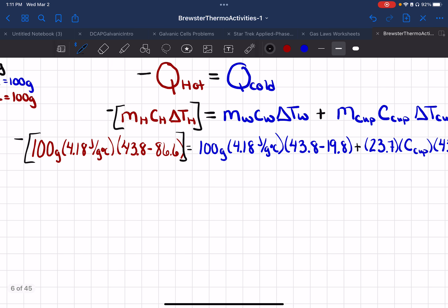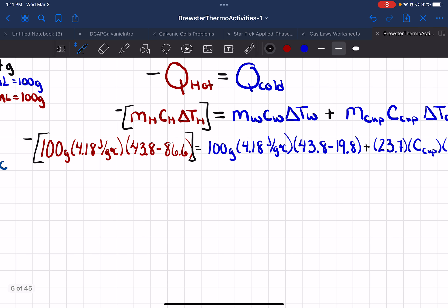So what I'm going to do at this point is I'm actually going to get this down to a single number. And so I have 100 times 100 times 4.18. And trying to change there, 43.8 minus 86.6. And when I plug that in, since I have a negative times a negative, we end up with this side being, and the units are joules.